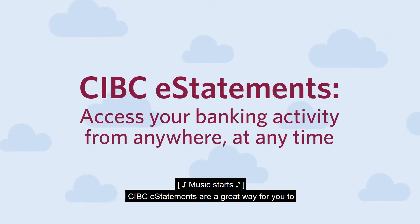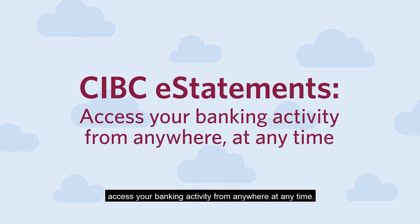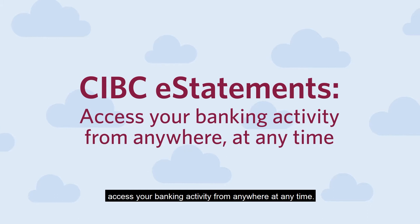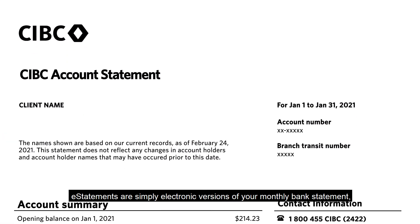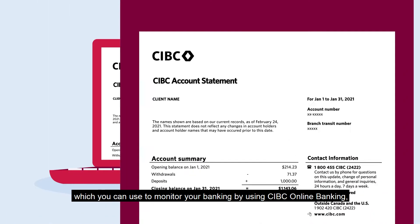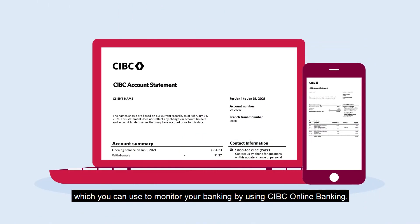CIBC eStatements are a great way for you to access your banking activity from anywhere, at any time. eStatements are simply electronic versions of your monthly bank statement, which you can use to monitor your banking by using CIBC Online Banking, the CIBC Mobile App, or print for your records anytime you'd like.